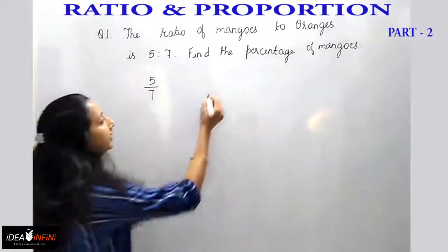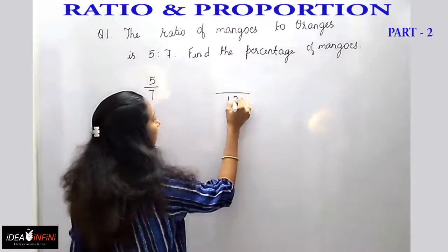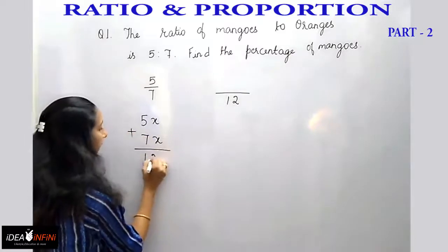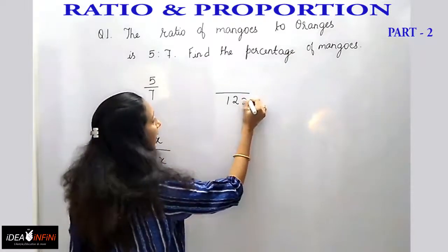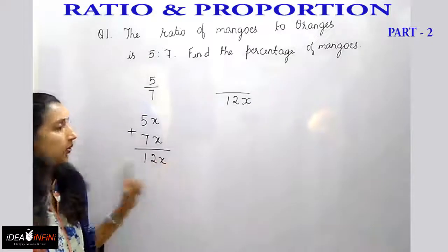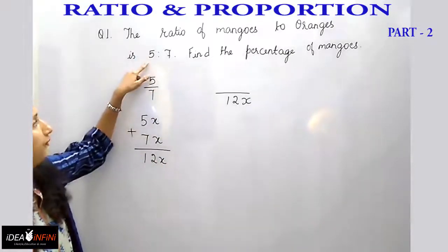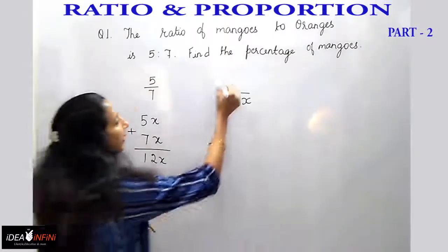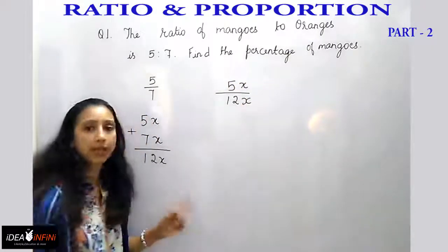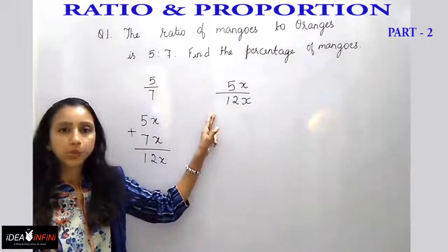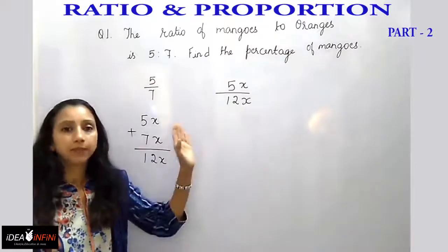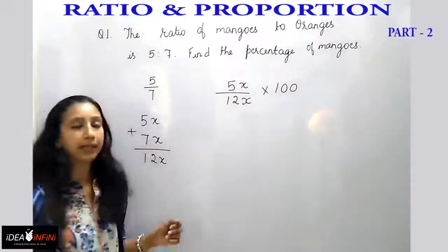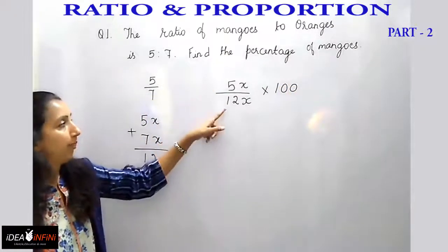The total is 5 plus 7, which is 12. If we write 5x and 7x, adding them gives 12x. So 5x is the number of mangoes and 7x is the number of oranges, giving 12x as the total. So we write 5x out of 12x fruits, using x because it can be any multiple, and then multiply by 100 to get the percentage — that is, 5 by 12 into 100.